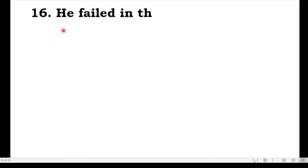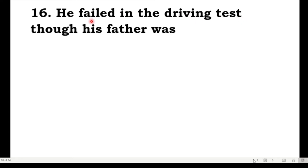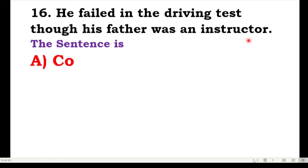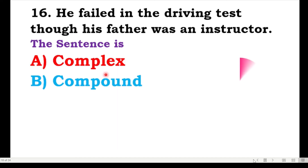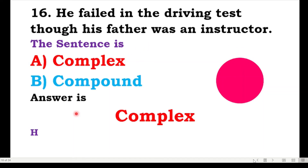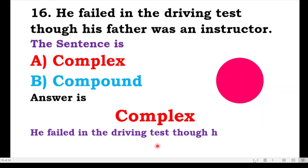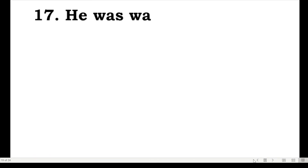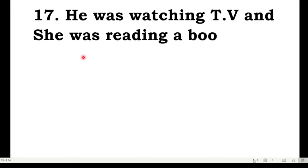The next one: he failed in the driving test though his father was an instructor — is the sentence complex or compound? 'Though his father was an instructor' is a dependent/subordinate clause. So this is a complex sentence. 'He failed in the driving test' is the main clause and 'though his father was an instructor' is the subordinate clause.